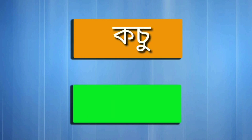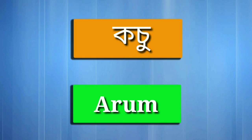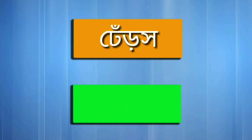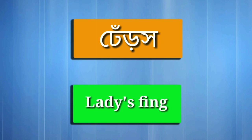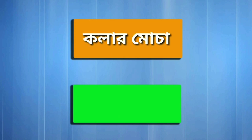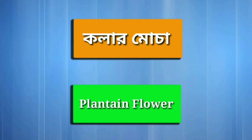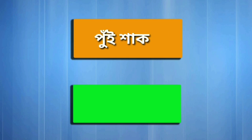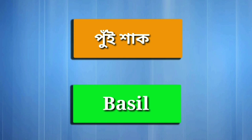Cochu — Aram. Dharosh — Ladies Finger. Next is Kolar Mocha — Plantain Flower. Poinshak — Basil.